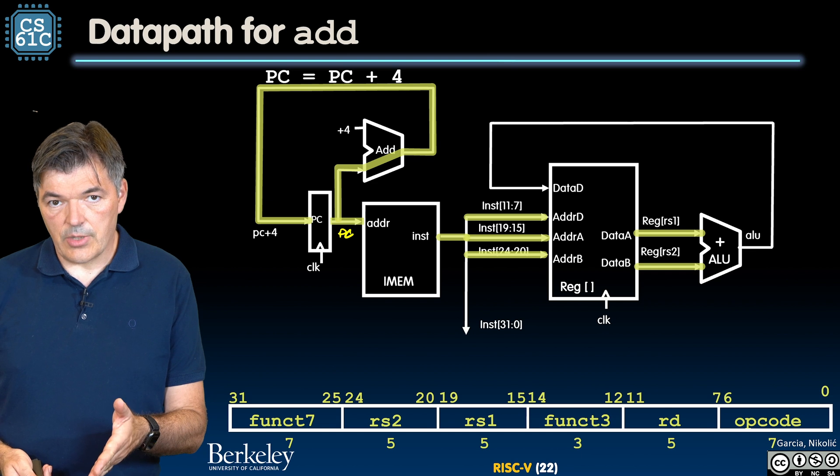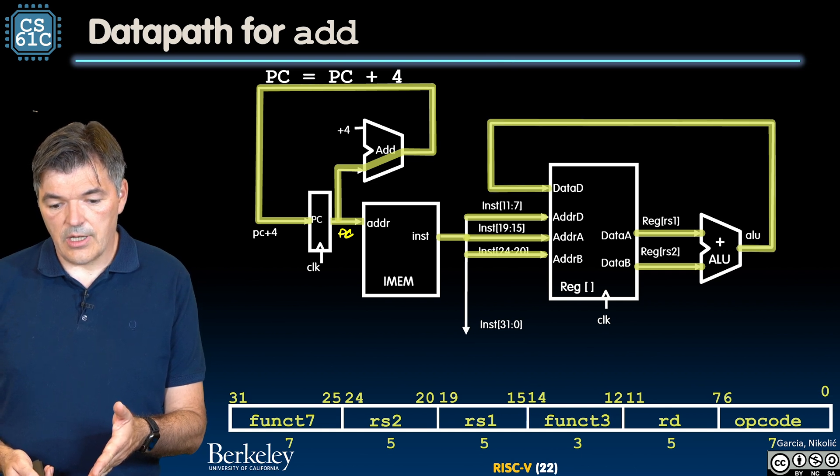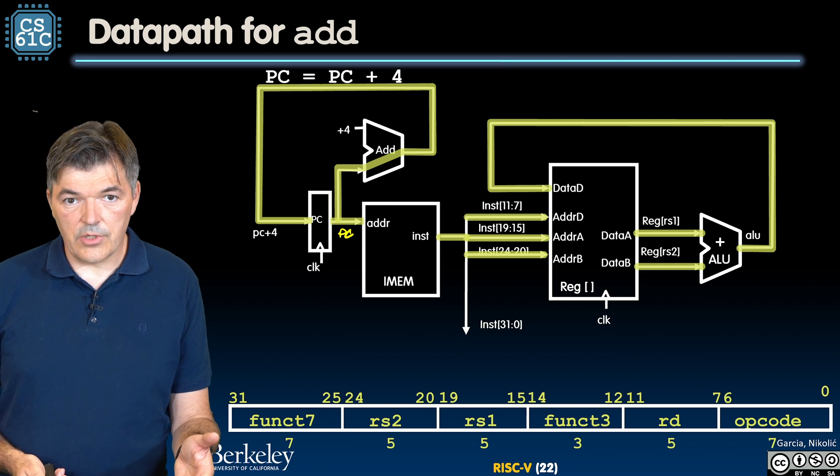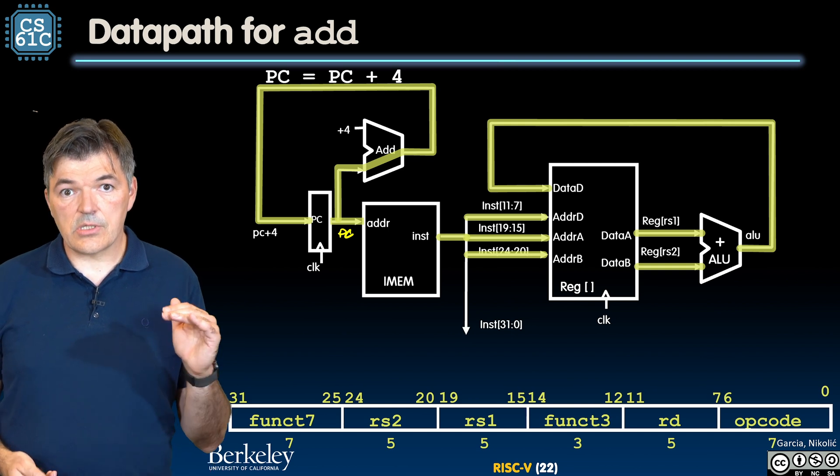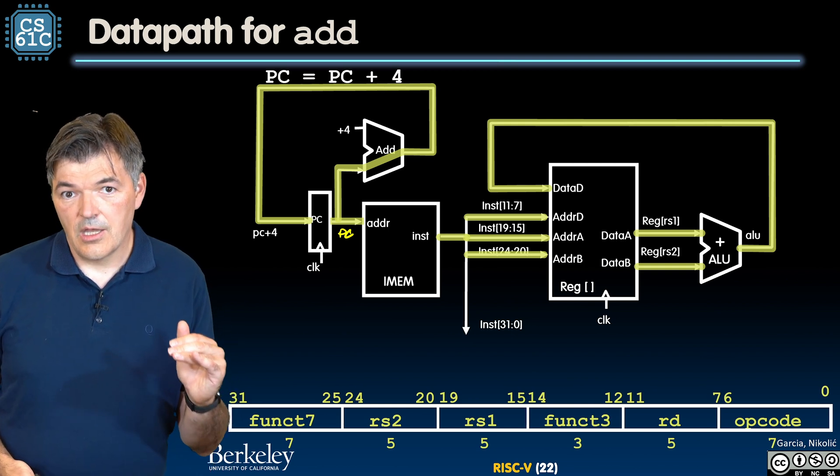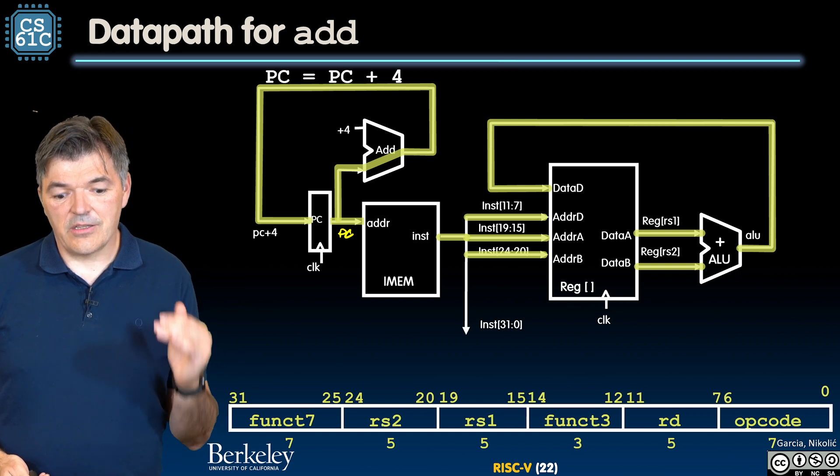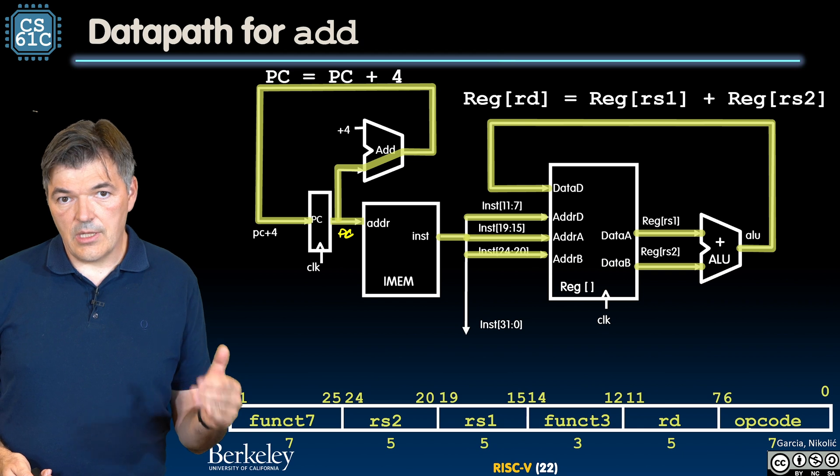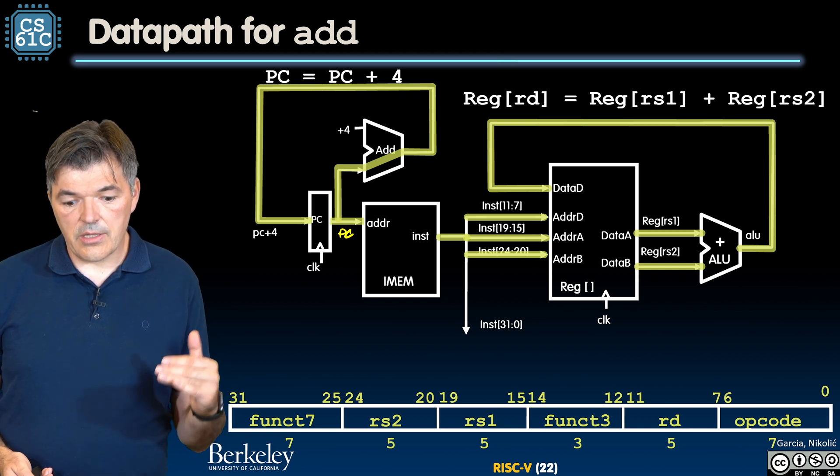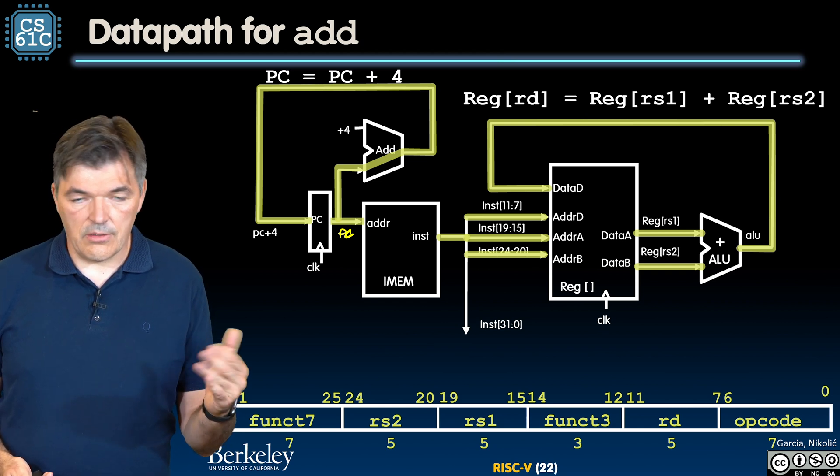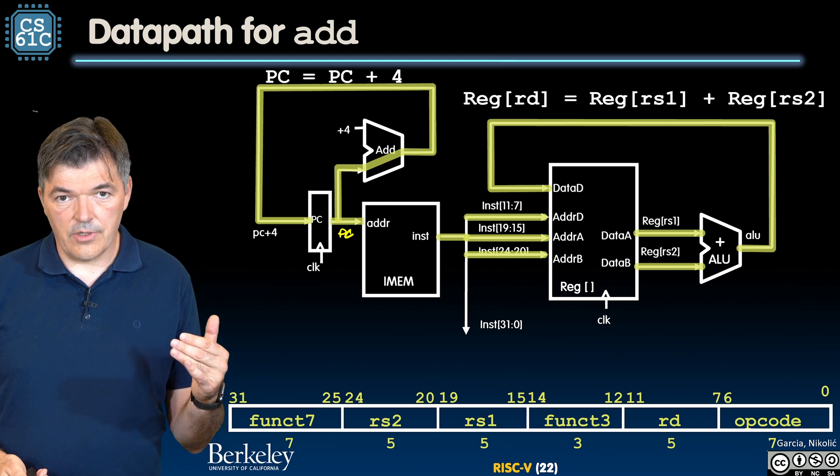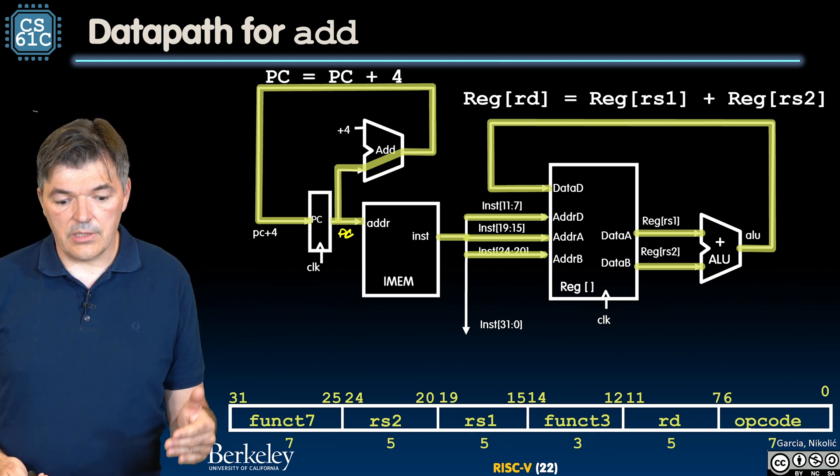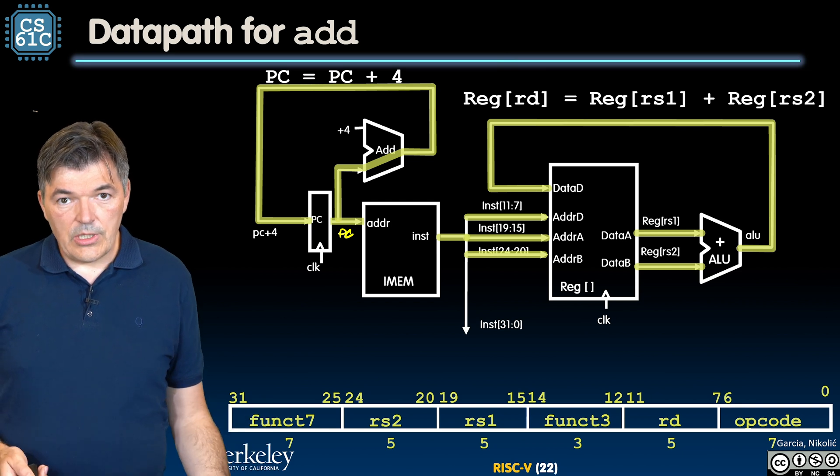Our results are going to show up at the output of the register file. After the ALU delay, we are going to get the new value that should be written in rd, and it is just going to be sitting at the input of the register file until the next clock tick. Then two new values, pc equals pc plus 4 and rd equals to the sum of rs1 and rs2, are going to be updated on the next clock tick.